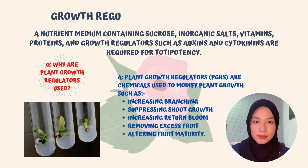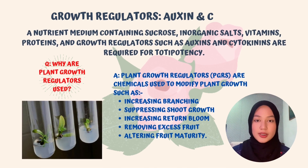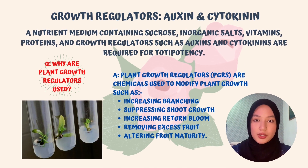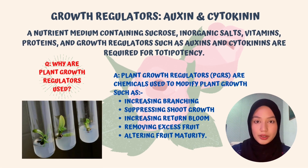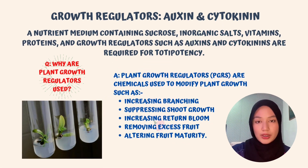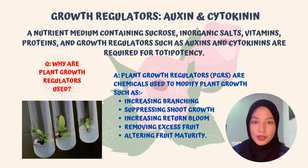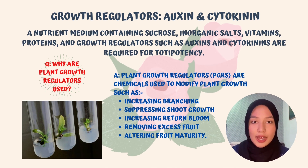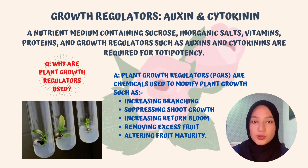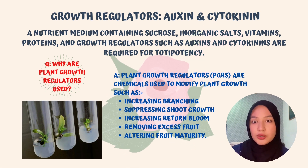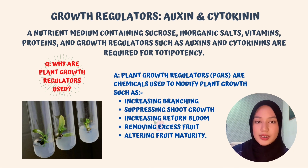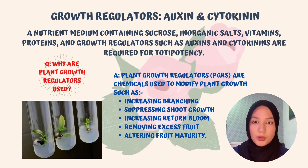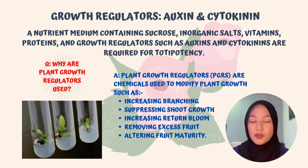Moving to growth regulators — auxin and cytokinin. A nutrient medium containing sucrose, organic salts, vitamins, proteins, and growth regulators such as auxin and cytokinin are required for totipotency. Totipotency is defined as the ability of a single cell to divide and produce all the differentiated cells in an organism. The question is: why are plant growth regulators used in nutrient medium for totipotency?